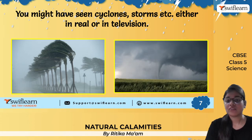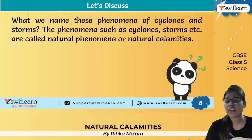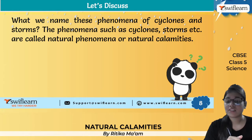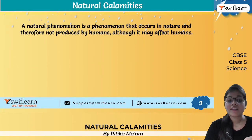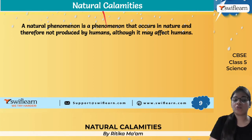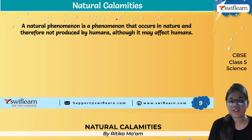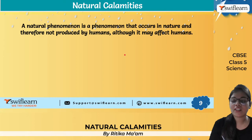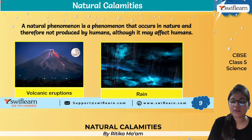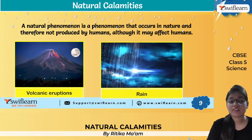You might have seen various natural calamities like cyclones and storms, in real life or on television. The phenomena such as cyclones and storms are known as natural calamities or natural phenomena. Since they occur in nature on their own and are not created by any humans, they are called natural calamities. They are phenomena that occur in nature, not produced by humans, but they can affect humans and animals to a very great extent.